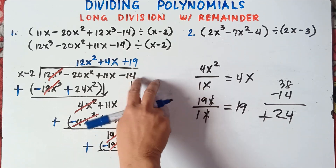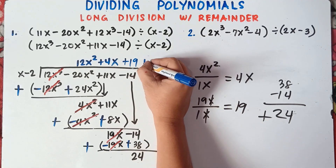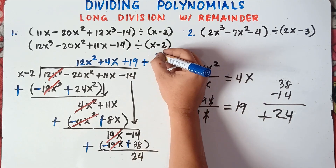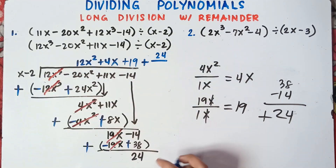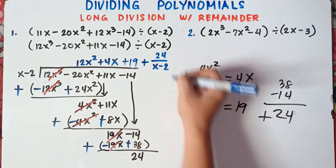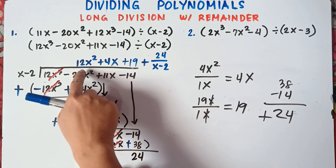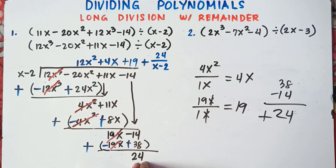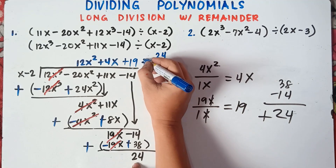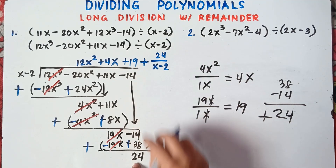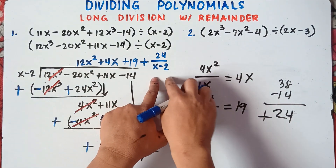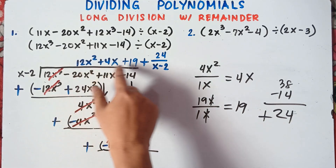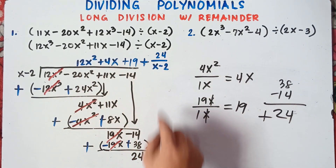To write the remainder in the equation, you put plus, then the remainder 24 as the numerator and x minus 2 as the denominator. So your final answer is 12x squared plus 4x plus 19 plus 24 over x minus 2.